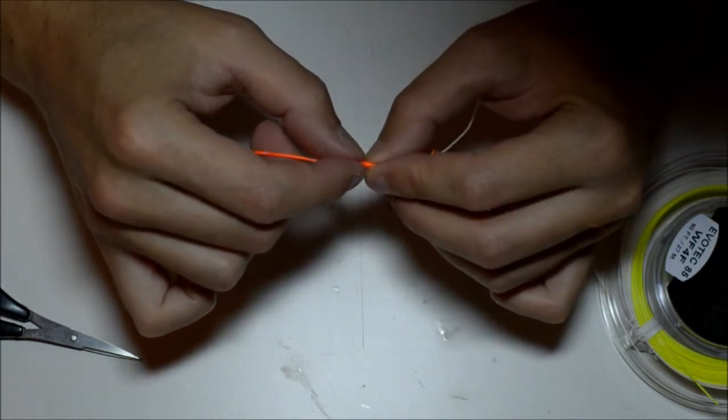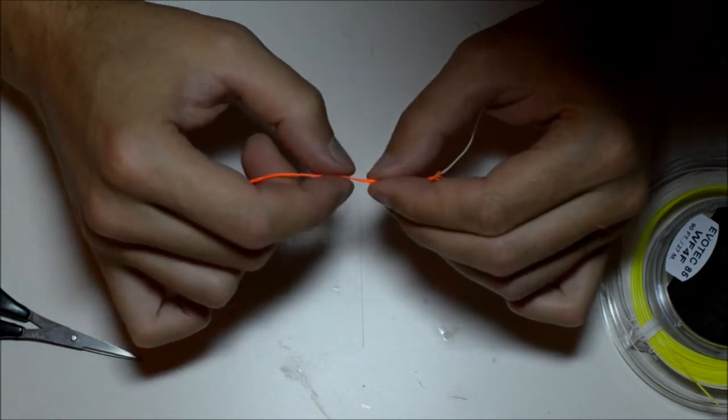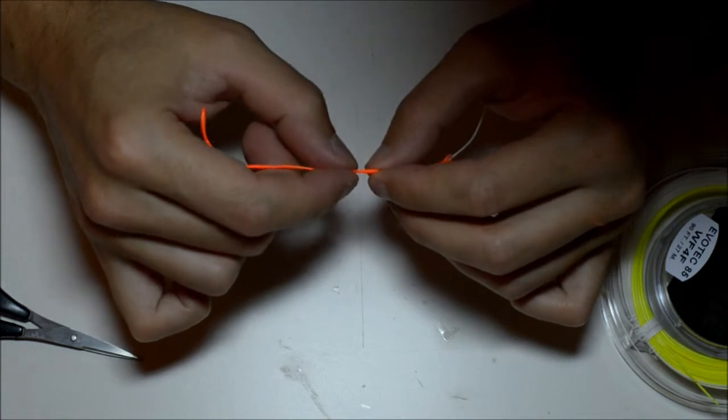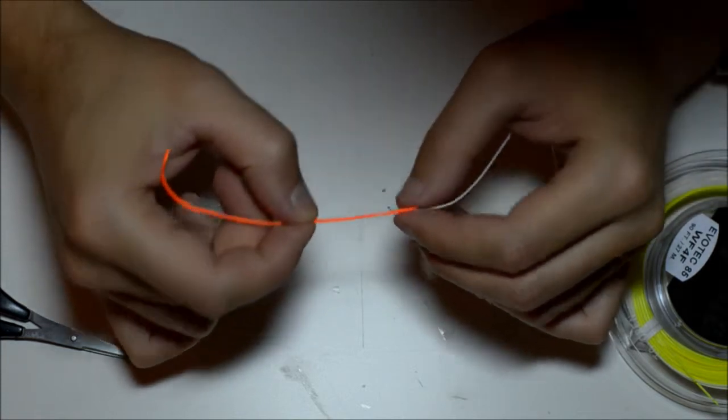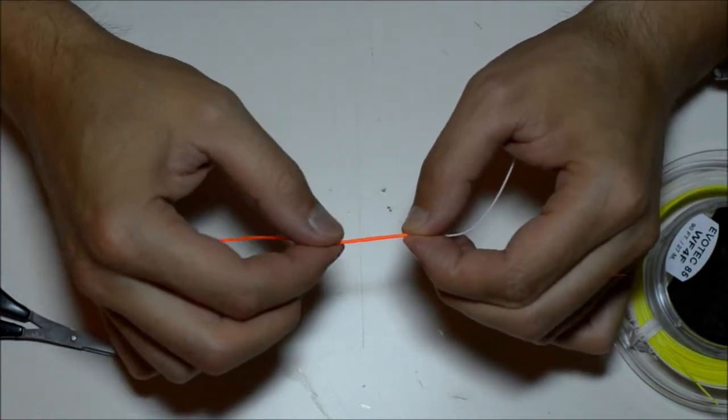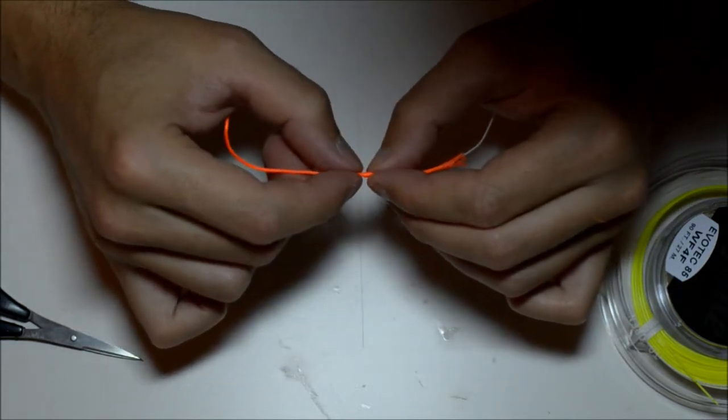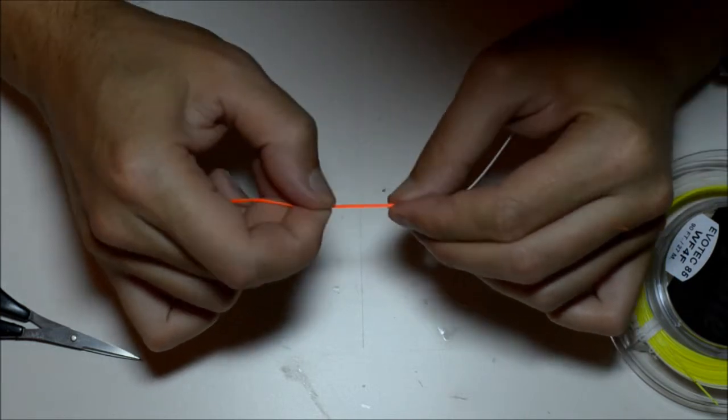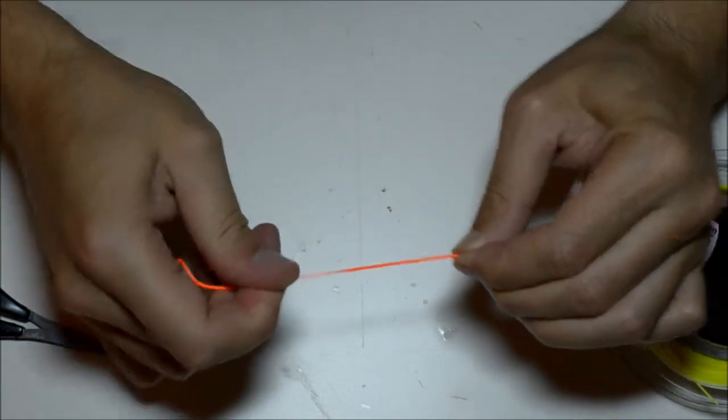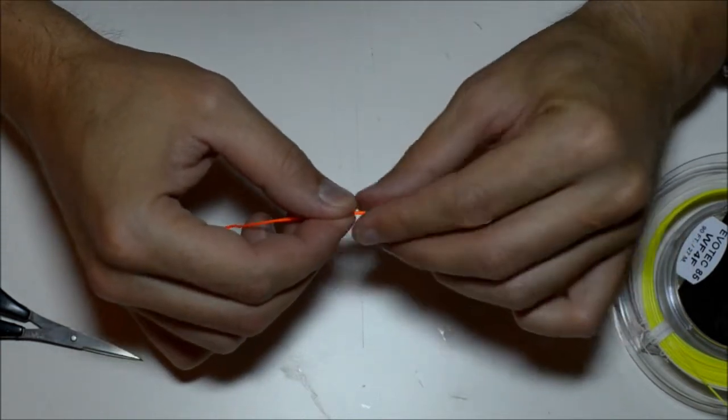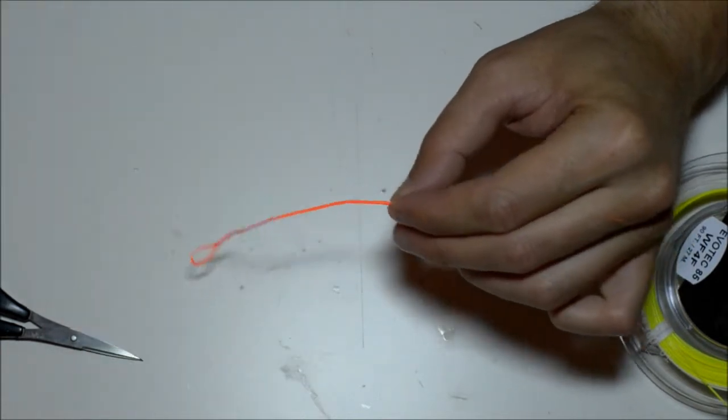This is a four weight line as you probably can see. So you don't need more, maybe about, I don't know, three centimeters of backing over the fly line. Like that. And now comes the fun part.